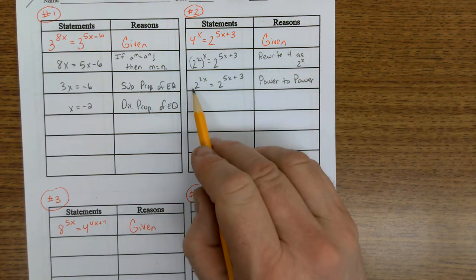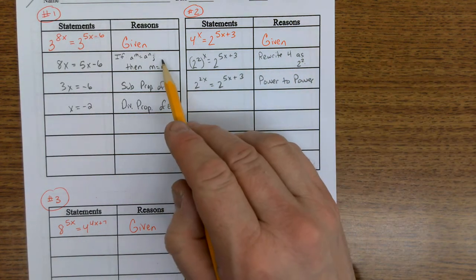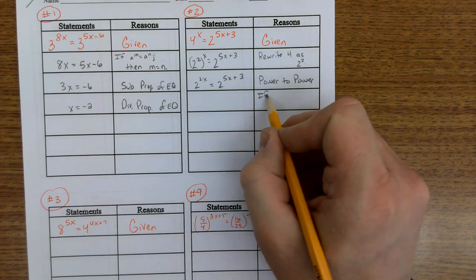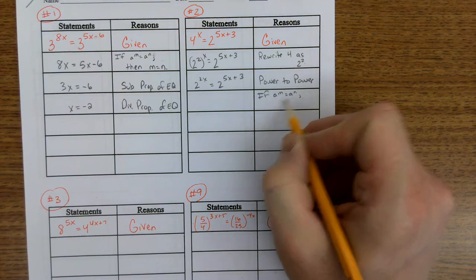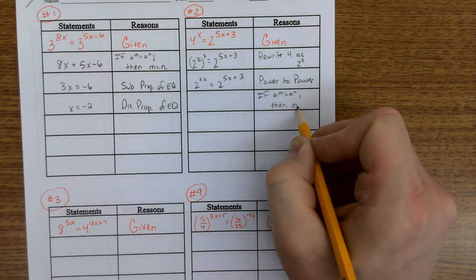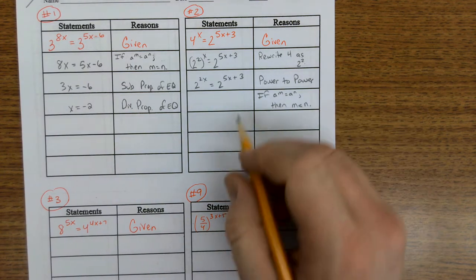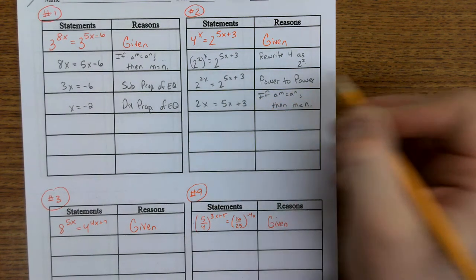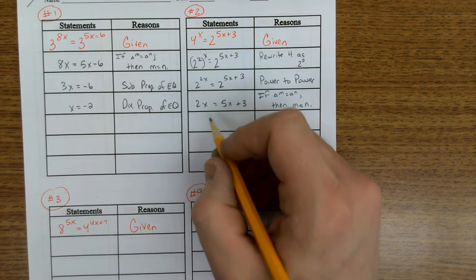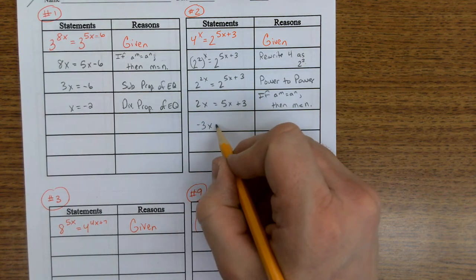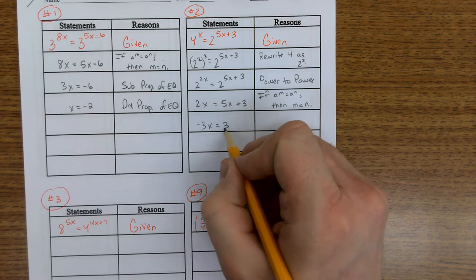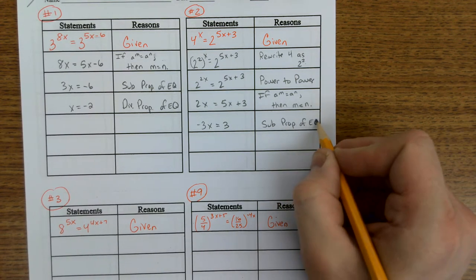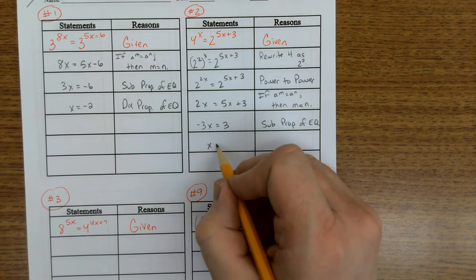Now what do I have? Same basis. So I can use this rule right here. If a to the m is equal to a to the n, then the exponents are equal. So we have 2x is equal to 5x plus 3. Subtract 5x away from this side. I have negative 3x is equal to 3. That's the subtraction property of equality. Divide by negative 3. x is negative 1.